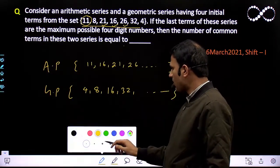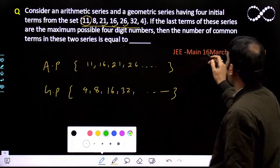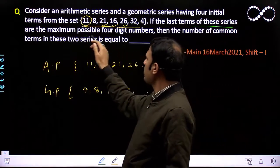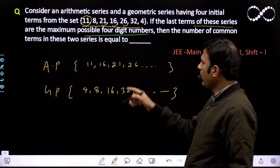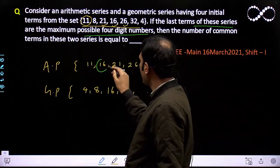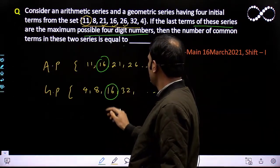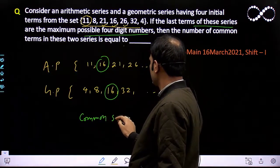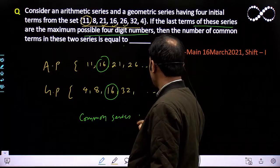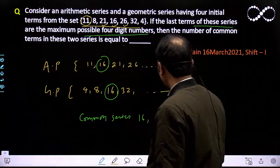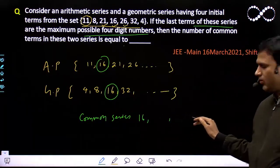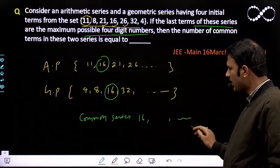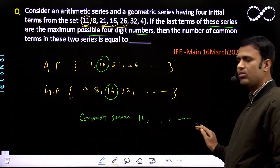In both of these you have to see the common elements. And it's given that the last terms of these series are the maximum possible four-digit numbers. Right now if we see these AP and GP, 16 is coming as common. So the first term in the common series is...